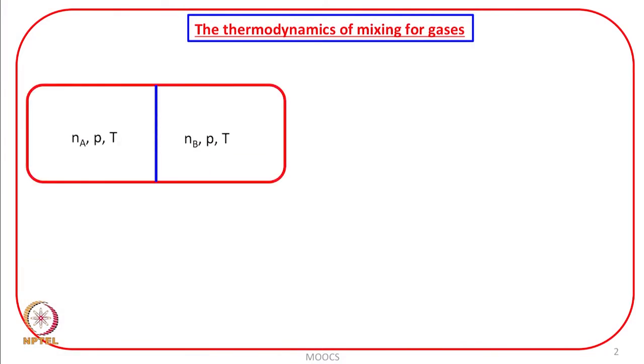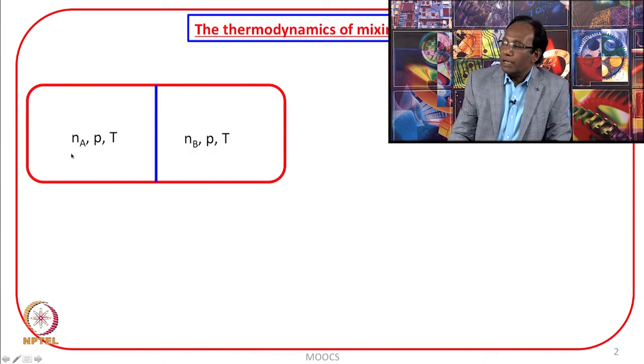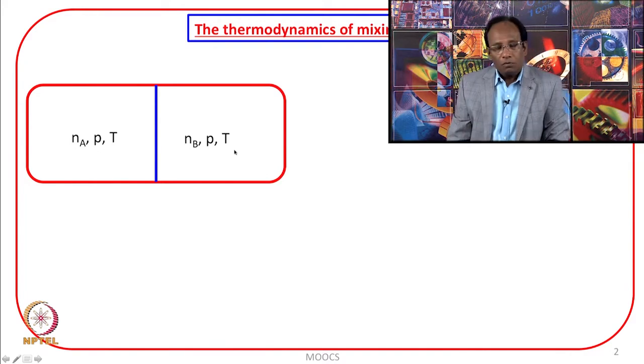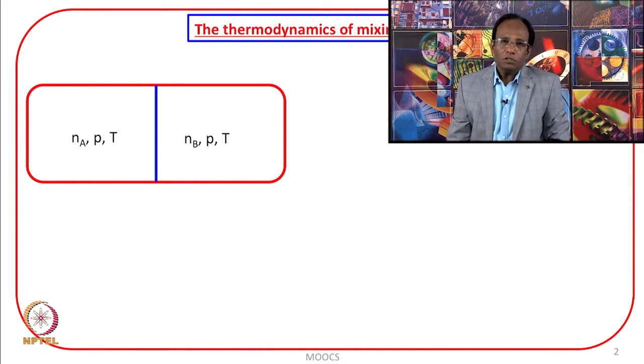Let us consider this figure. Let us consider these two chambers. On the left-hand chamber, let us consider a gas in which N_A number of moles of gas A at pressure p and temperature t are enclosed. And on the right-hand side of the chamber, you have N_B number of moles of gas B at pressure p and t. We want to develop equations for the thermodynamic changes in thermodynamic properties when this partition is removed, or when these two gases are allowed to mix. To begin with, we will develop equations for perfect gases.